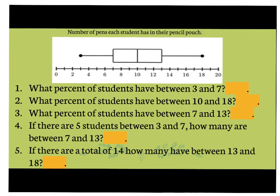Let's answer some questions about percentages. The first question says: what percent of students are between three and seven? Here is three and here is seven — that is going to be 25% of our data, just because it's between those two numbers. What percent of students are between 10 and 18? That's going to be two sections, each 25%, so a total of 50%. What percent of students are between seven and 13? That's our interquartile range — two sections, so again 50%.